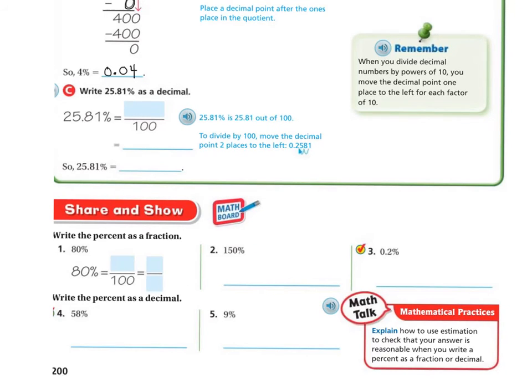The next one says write 25.81 or 25 and 81 hundredths percent as a decimal. So 25 and 81 hundredths is 25.81 out of 100. Divide by 100. You're going to move the decimal point two places to the left. My decimal point was right here, so I'm going to move it over one, two spaces, so my decimal point's going to go right there. 0.2581.